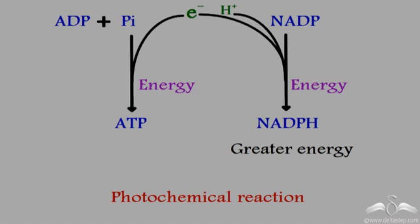Energy in the form of electrons is used to bind an inorganic phosphate to adenosine diphosphate (ADP) to form highly energised adenosine triphosphate (ATP), which stores energy. These electrons, along with the H⁺ ions liberated during photolysis of water, convert NADP to NADPH, which stores a greater amount of energy than ATP.